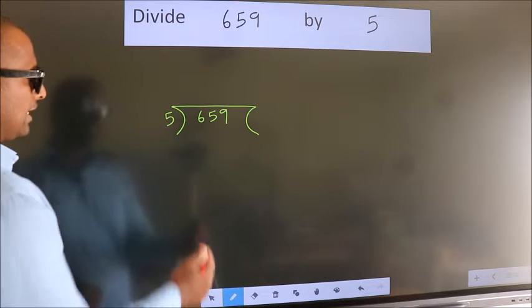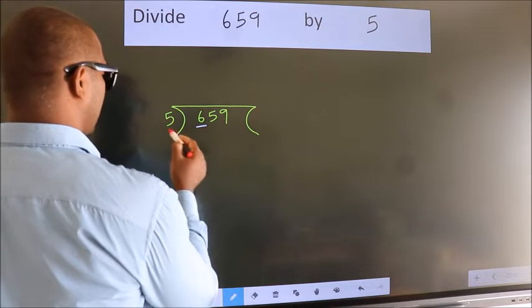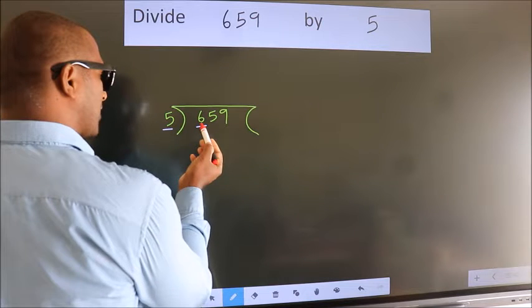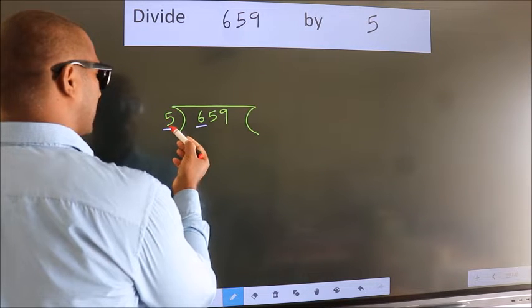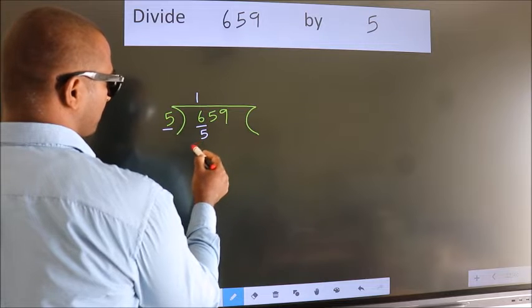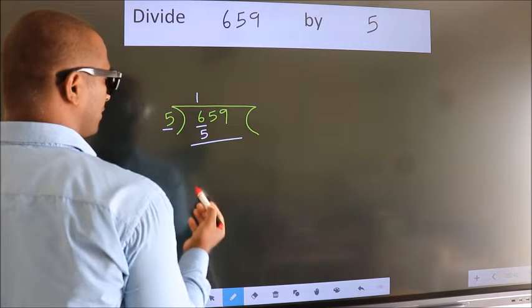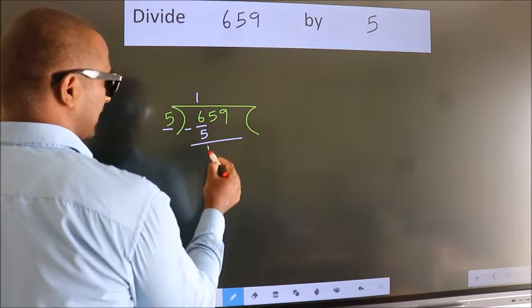Next, here we have 6, here 5. A number close to 6 in 5 table is 5 once 5. Now we should subtract. We get 1.